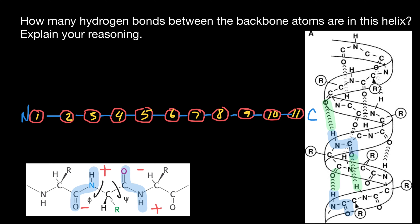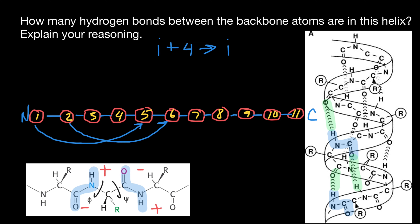This hydrogen bonding only happens when amino acid i reacts with the amino acid four positions downstream (i+4). So amino acid number one makes a hydrogen bond with amino acid number five. Amino acid number two makes a hydrogen bond with amino acid number six. We now have two hydrogen bonds, then three, then four.